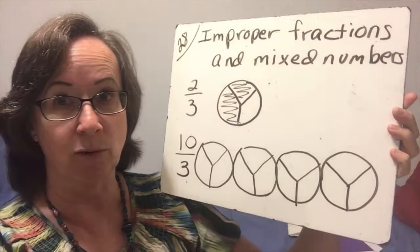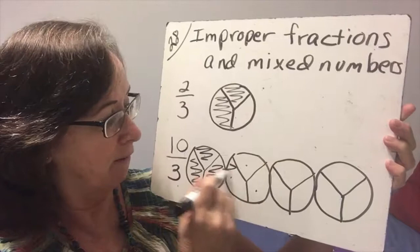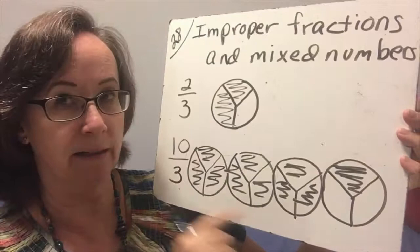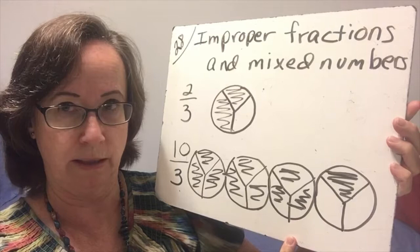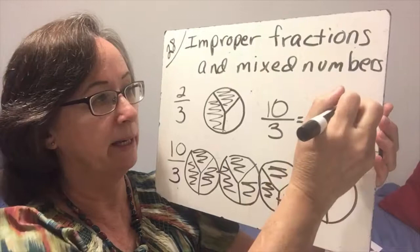So if I took each one of these thirds and I counted 10 of them and shaded 1, 2, 3, 4, 5, 6, 7, 8, 9, and 10, then the 10 thirds is exactly the same as 1, 2, 3 holes and 1 third left over.